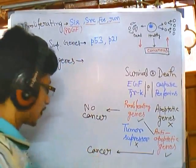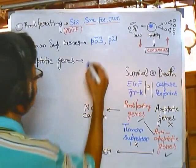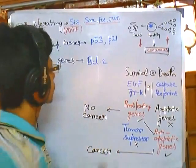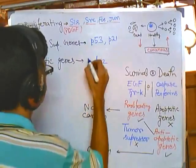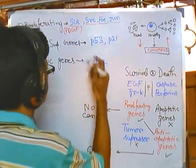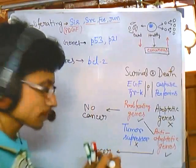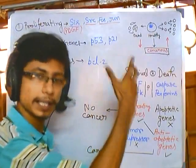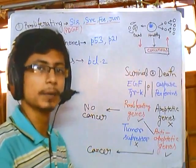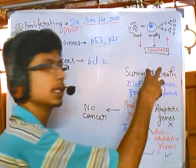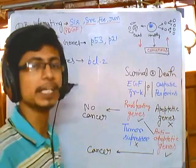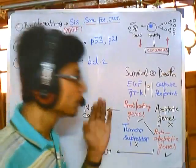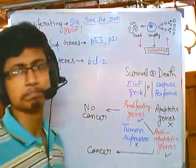An example of an apoptotic gene is bcl2. This gene produces a product — a master protein — which in turn activates other proteins that help the cell be killed via the apoptosis pathway. These three types of genes — proliferating genes, tumor suppressor genes, and apoptotic genes — form the most important genetic basis of cancer.